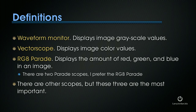There are three principal scopes inside Premiere: the Waveform Monitor, the Vectorscope, and the RGB Parade. The Waveform Monitor tells us everything we need to know about the grayscale value of an image, but nothing about color, because it displays image grayscale values. The Vectorscope tells us everything we need to know about color, but nothing about black and white, because it displays the color values of an image. And the RGB Parade displays the amount of red, green, and blue in an image.